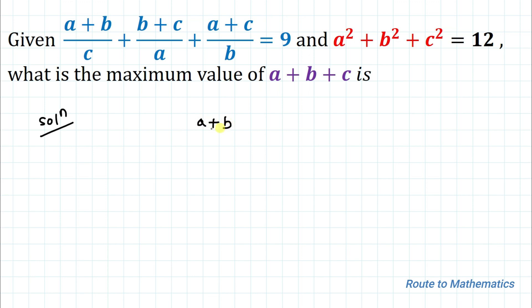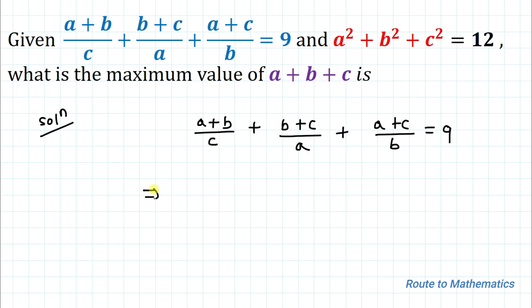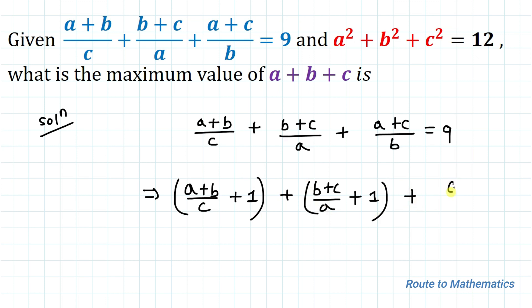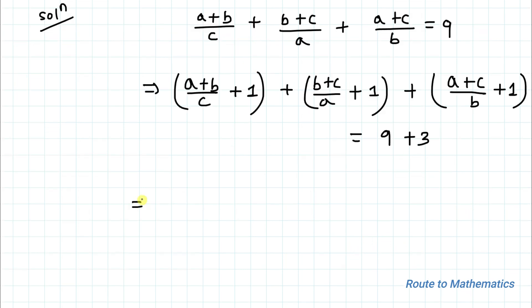We have (a+b)/c + (b+c)/a + (a+c)/b = 9. In the next step, let's add 1 to each ratio, so we can write (a+b)/c + 1 + (b+c)/a + 1 + (a+c)/b + 1 = 9 + 3. This gives us (a+b+c)/c + (a+b+c)/a + (a+b+c)/b = 12.